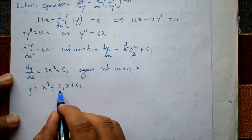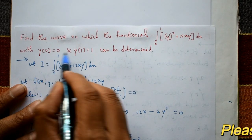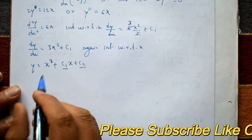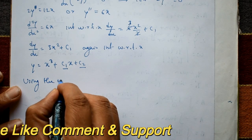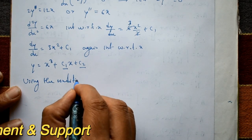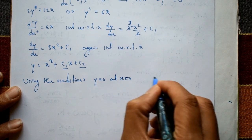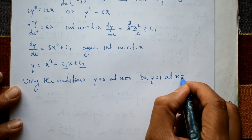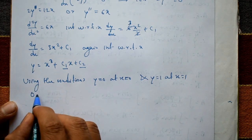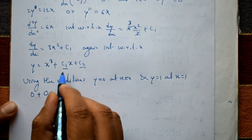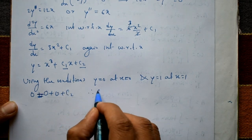We need to find c₁ and c₂ using the given conditions: y(0) = 0 and y(1) = 1. Applying y = 0 when x = 0 to the equation y = x³ + c₁x + c₂ gives 0 = 0 + 0 + c₂, therefore c₂ = 0.